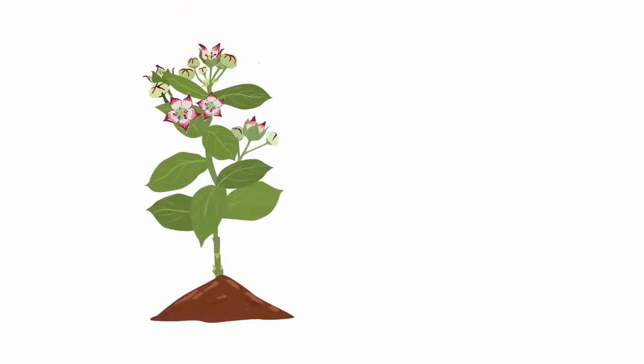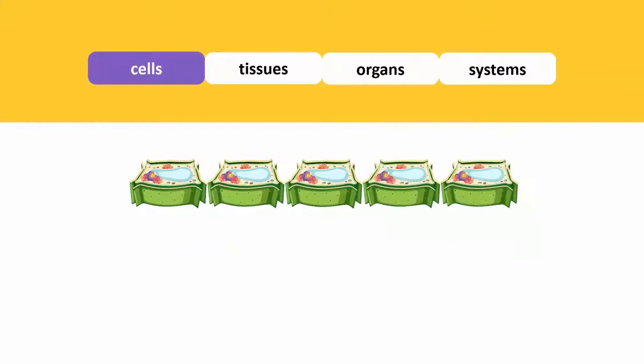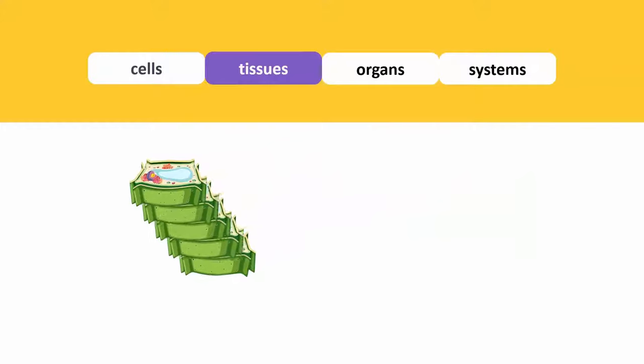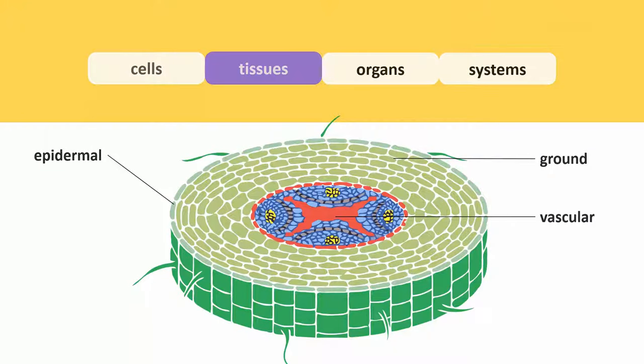Plants are no different. Plant cells combine to form tissues. Plant tissues can be epidermal, ground, vascular, or mesophyll tissues.